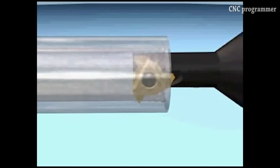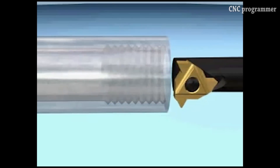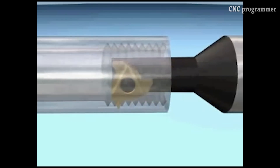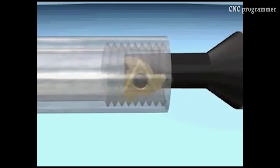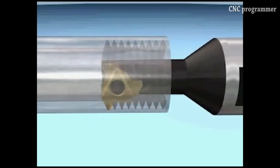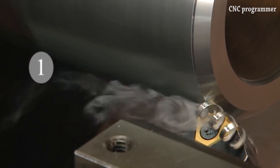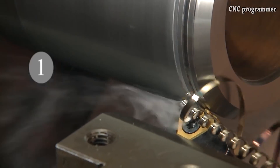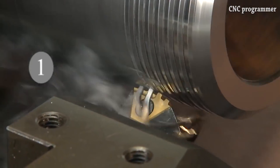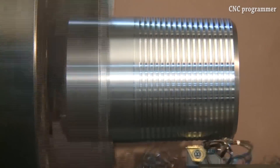Threading methods: Each threading method has its own advantages in certain situations. Thread turning is a productive threading method for rotating components around the center of rotation. It covers the largest number of thread profiles and is an easy and well-known process that provides a good surface finish and thread quality.